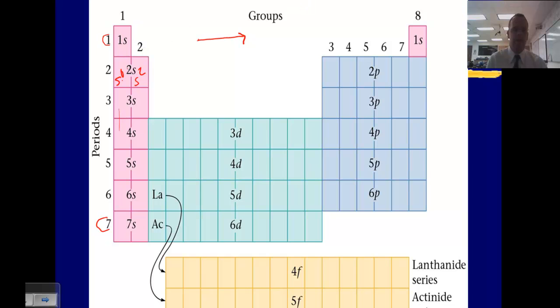So we start with 1s. Once 1s is full, we fill 2s, then 2p, 3s, then 3p.